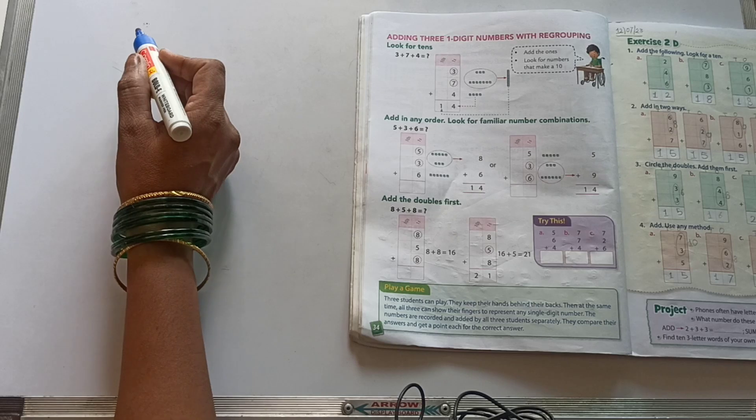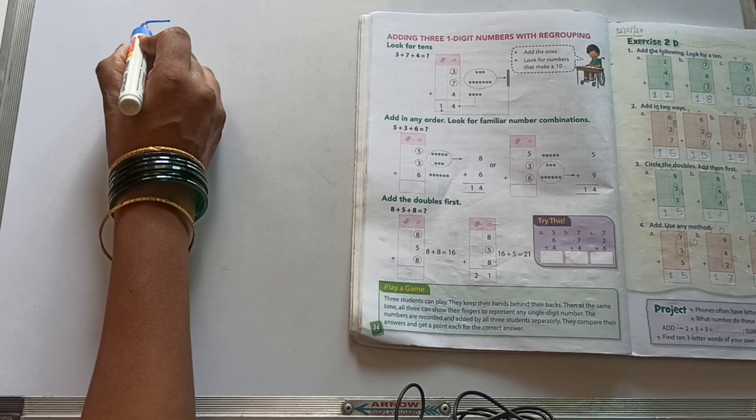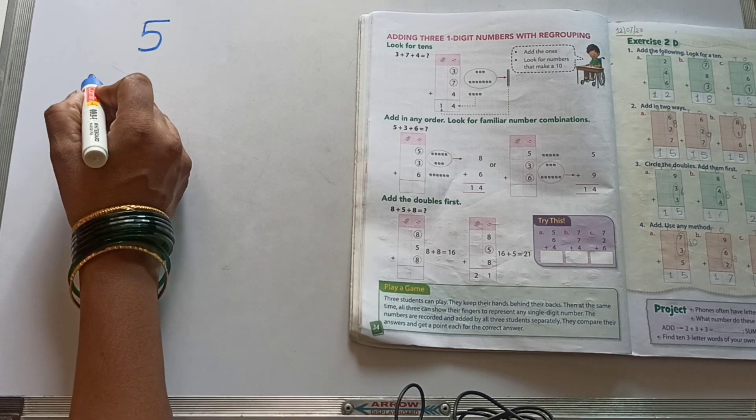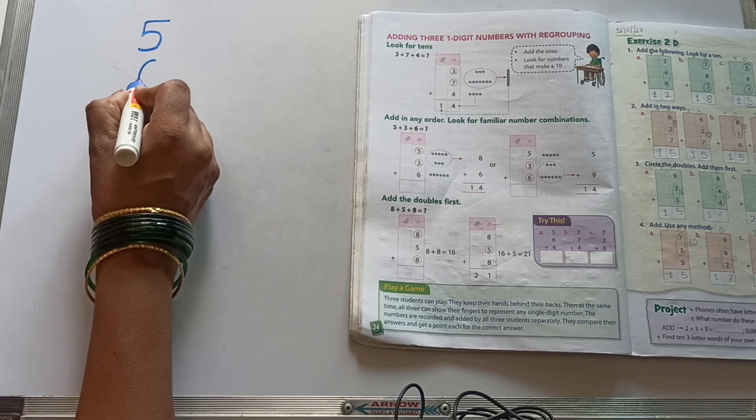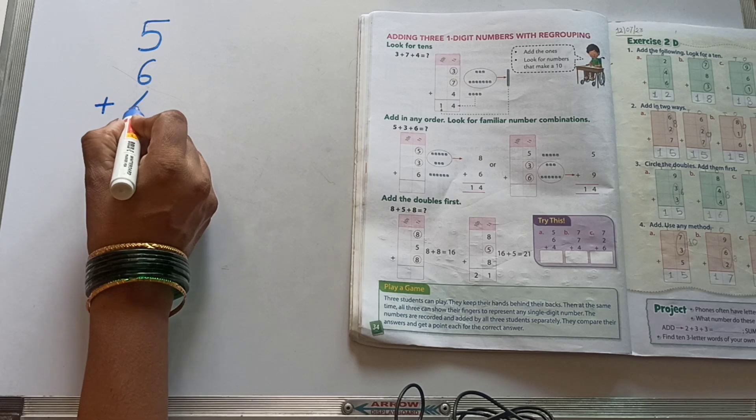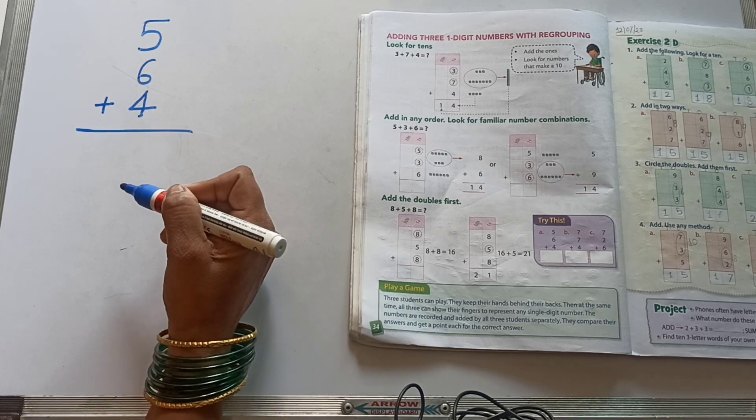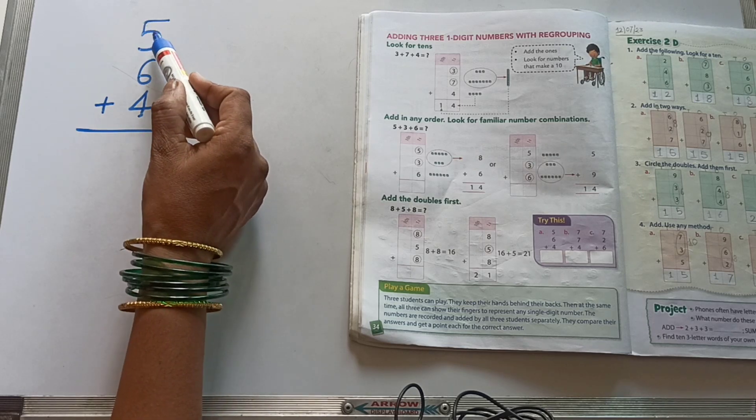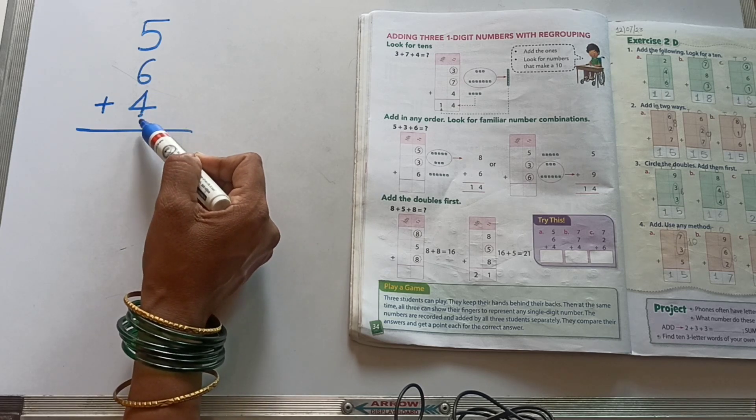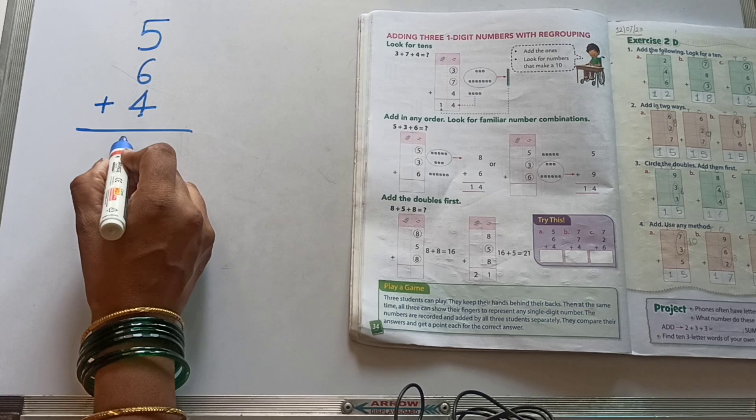Let's solve all three students. Write down here. 5 plus 6 plus 4. Our answer: 5 plus 6, 11. 11 plus 4, 15. We got our answer, 15.